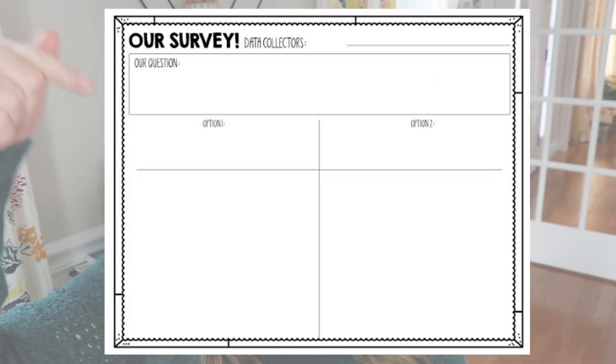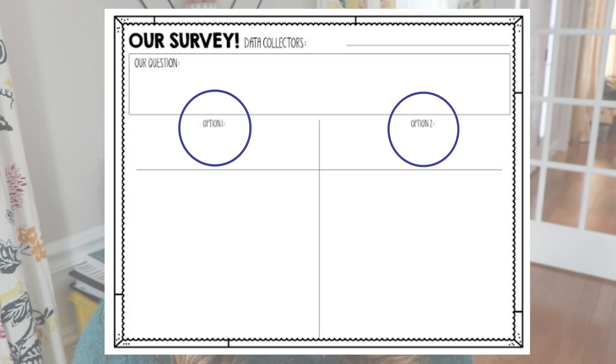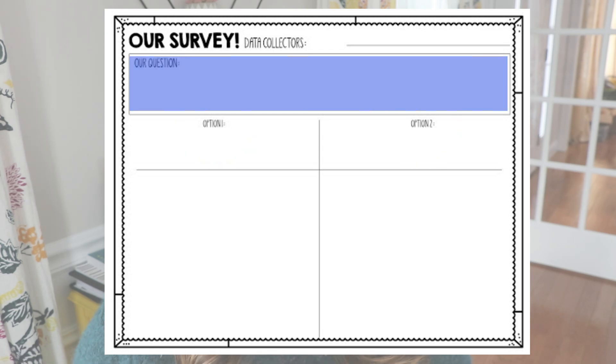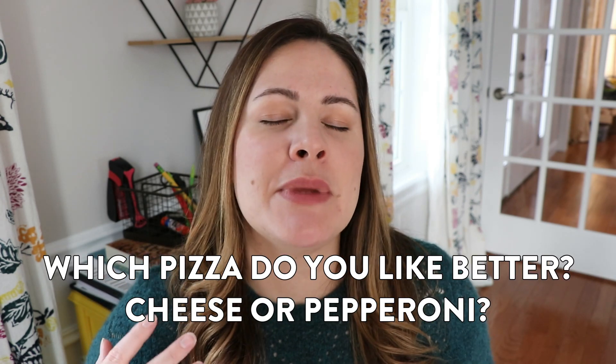In first grade, I would have them make a bar graph with this information. In second grade, they might make a pictograph or circle chart — whatever type of chart you're working on. I use a sheet to get students started and I like to have them only choose two options. We do a lot of talk about what makes a good survey question. For example, instead of asking 'do you like pizza, yes or no,' I'd ask 'which pizza do you like better — cheese or pepperoni?' That way the question is more interesting and students have to really think before answering. Having two options also makes the data collection go a lot faster.